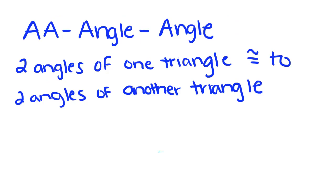So AA, or angle-angle, is when you have two angles of one triangle congruent to two angles of another triangle. And if this is true, you can say, therefore, the triangles are similar.